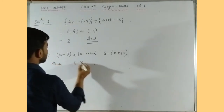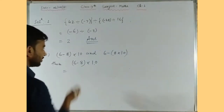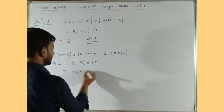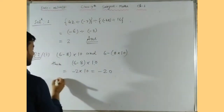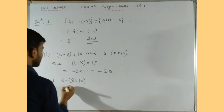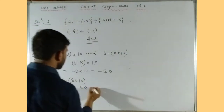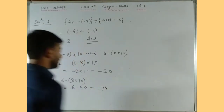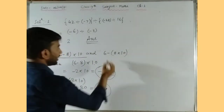Simplifying the first: 6 minus 8 multiplied by 10. Here minus 8 is negative and 6 is positive, so we subtract. The greater number is 8, so 8 minus 6 equals 2, and the sign of the greater number is taken — so minus 2 multiplied by 10 equals minus 20. For the second expression: 6 minus 8 multiplied by 10 gives 6 minus 80, which is minus 74.